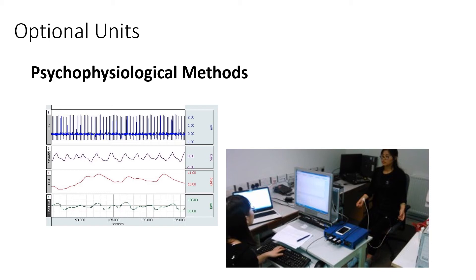In the spring term, you will have other optional units that you can take. We weren't able to run this one this year because of COVID, but hopefully next year this looks to be back on the books. This is called psychophysiological methods. In this unit, you learn how to make simple physiological measurements such as heart rate, breathing, and simple EEG measurements.